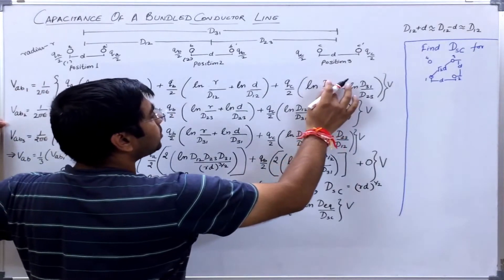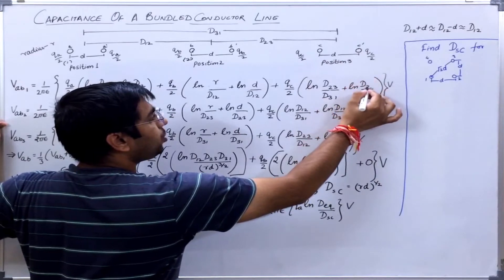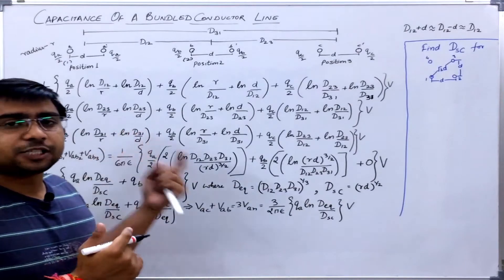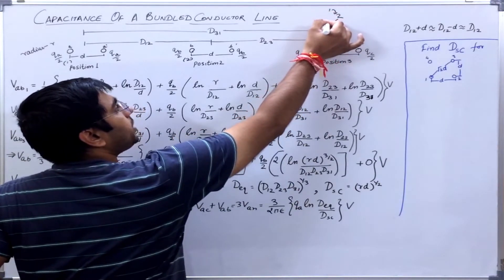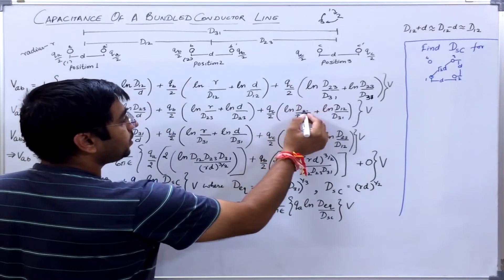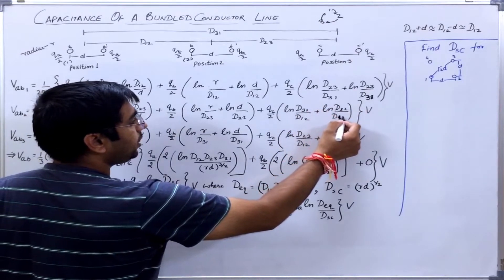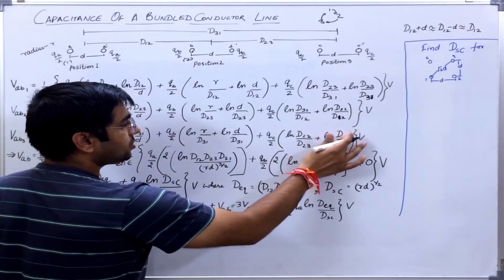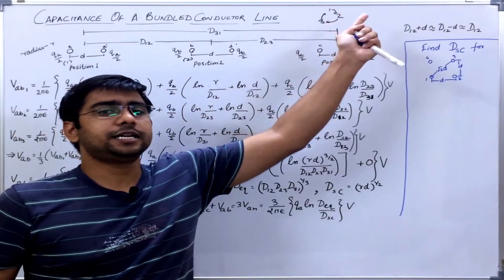For section 2, I just change the subscripts cyclically: 1 to 2, 2 to 3, and 3 to 1. So D12 changes to D23, D23 changes to D31, and D31 changes to D12, and so on. Similarly all expressions can be written just by cyclically changing the subscripts.